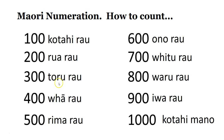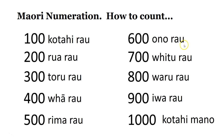300 is toru rau. Number 400, whā rau. Number 500, rima rau. Number 600, ono rau.